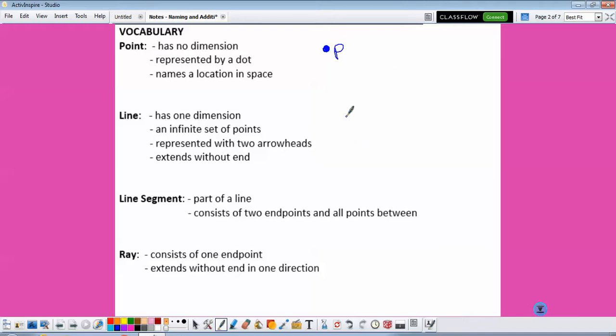A line has one dimension, it's an infinite set of points represented with two arrowheads, one on each end, and it extends forever. Let's say if we label this with a K and a P, this would be written as line KP, or it could also be line PK.